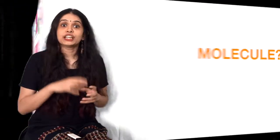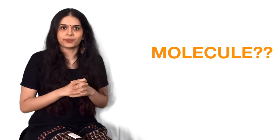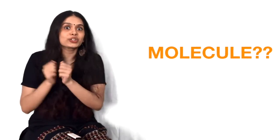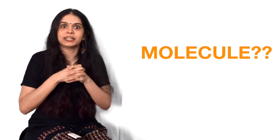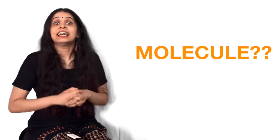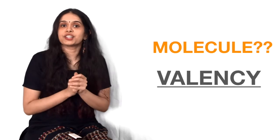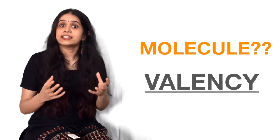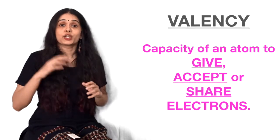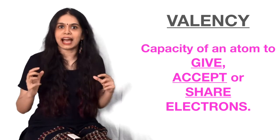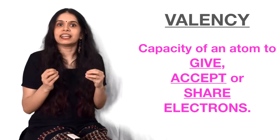Today what are we going to study? Yeh jo atoms judte hai to make a molecule, yeh judte kaise hai? How do atoms bond together? So this is called valency. What does valency mean? In simple words, let us try to understand it. What atoms do is that which are different atoms, they share their electrons.